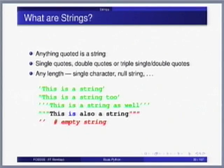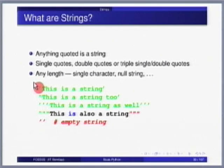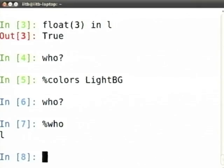Moving on to strings: anything within quotes is typically a string. To create a string variable you can do it in multiple ways — single quotes, double quotes, or triple single quotes or double quotes. Strings can be of any length, either single character or null string. Please note that the quotation mark is always a forward tick — it is the character below the double quotes, not the back tick near the tilde.